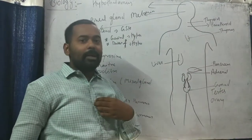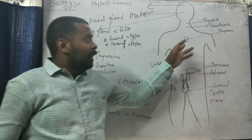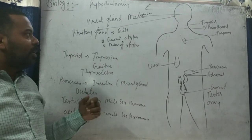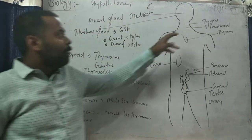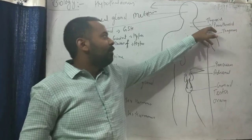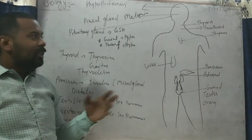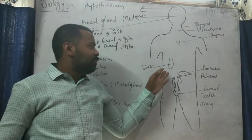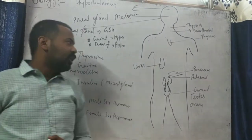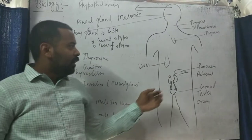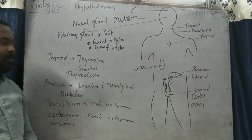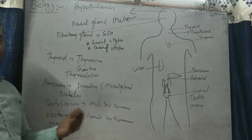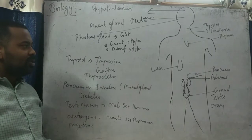Hyposecretion of thyroxine causes goiter, and hypersecretion of thyroxine causes thyroidism, which is normally more common in females. The next gland is the thymus gland, present in the middle of the chest cavity, slightly to the left side. It is active until puberty (around 13 years) and helps maintain the growth and development of the human body. After that, growth is regulated by the pituitary gland. Also within the thyroid region is the parathyroid gland, which secretes parathormone, regulating calcium and phosphorus levels in our body.